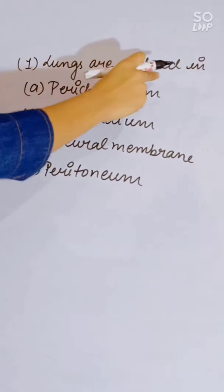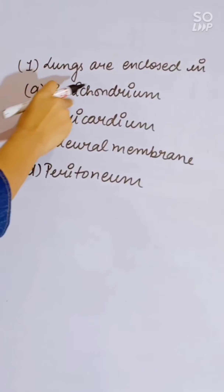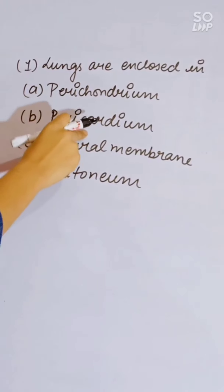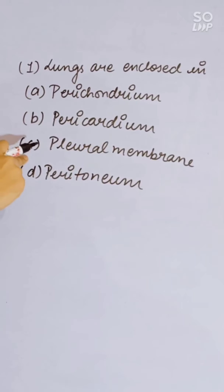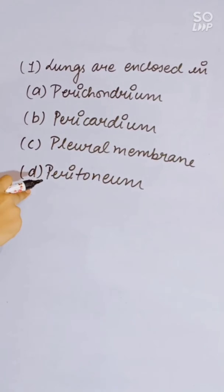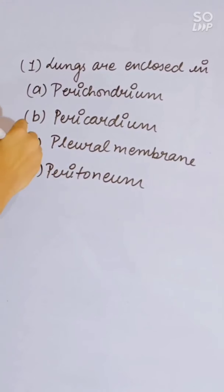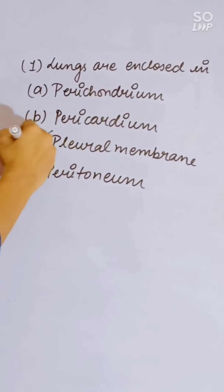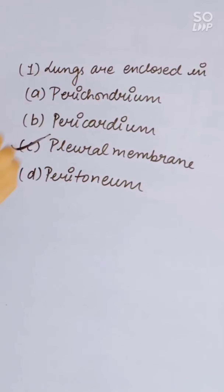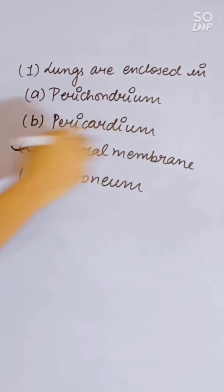Lungs are enclosed in: perichondrium, pericardium, pleural membrane, or peritoneum. The pleural membrane is the covering of the lungs. Correct answer is pleural membrane.